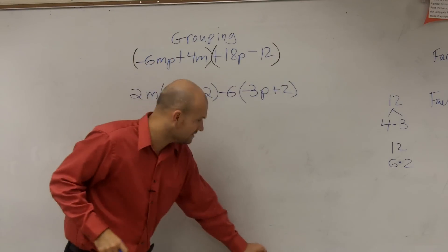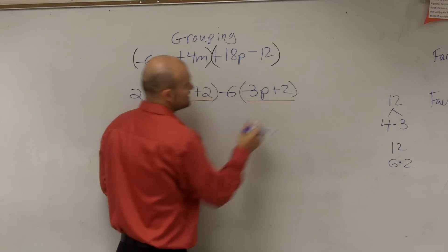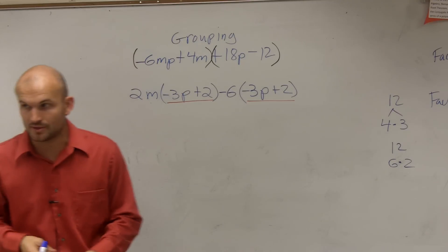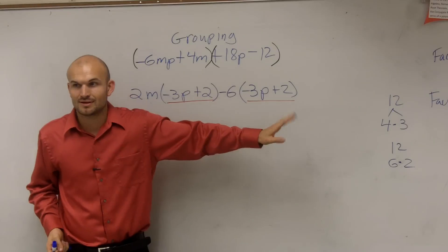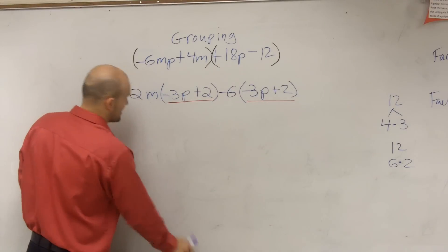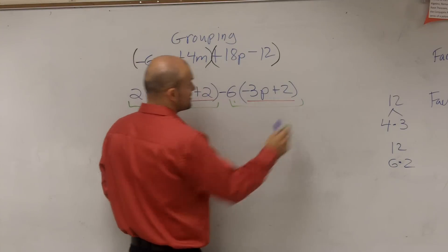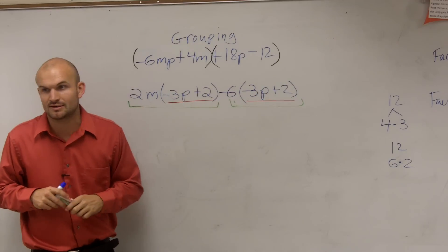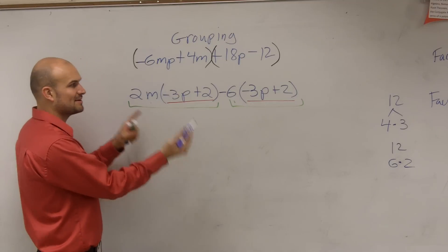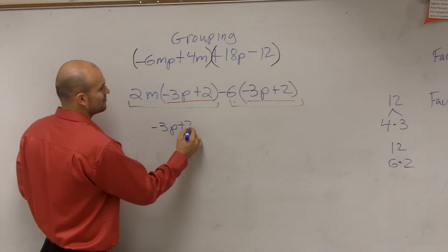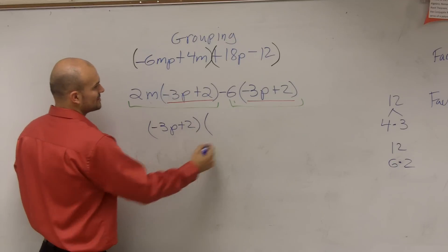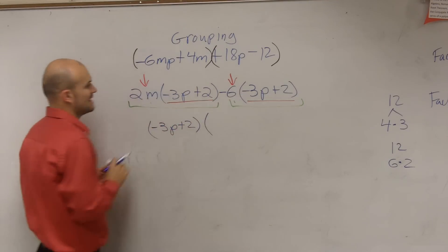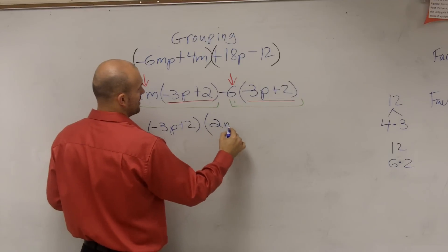The reason why I did that is because when factoring by grouping, you want these two parentheses to be the same. Sometimes you might have to factor by a positive or a negative number. Since these two are the same, you now have two terms — big terms, but theoretically two terms. What do these two terms share? A negative 3p plus 2. So I'm going to factor out a negative 3p plus 2, and when I do that the only thing I'm left with is a positive 2m minus 6.